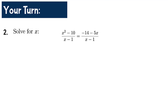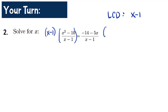Question number two: solve for x in the equation (x²-10)/(x-1) equals (-14-5x)/(x-1). The LCD here is (x-1). Multiplying both sides by (x-1) cancels the denominator on both sides, leaving x² - 10 = -14 - 5x.